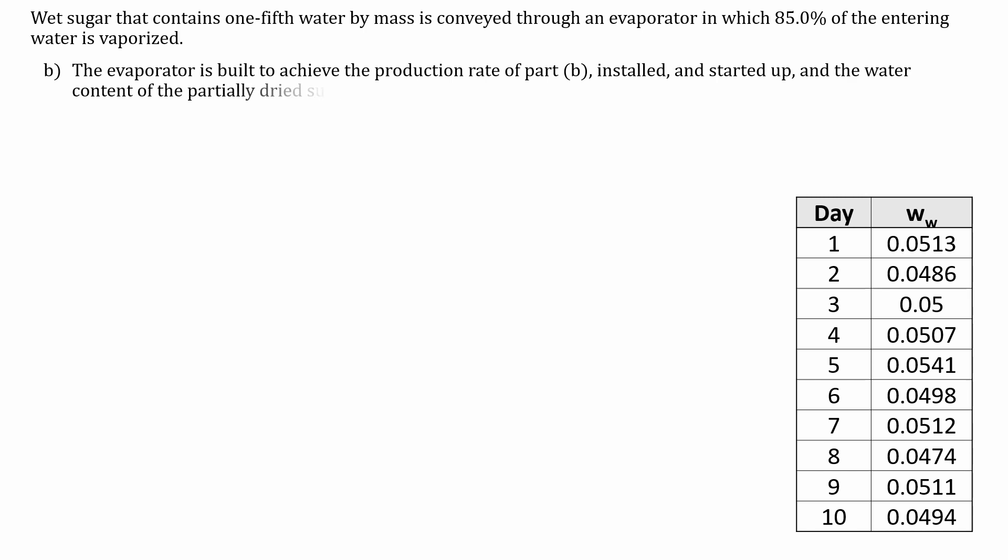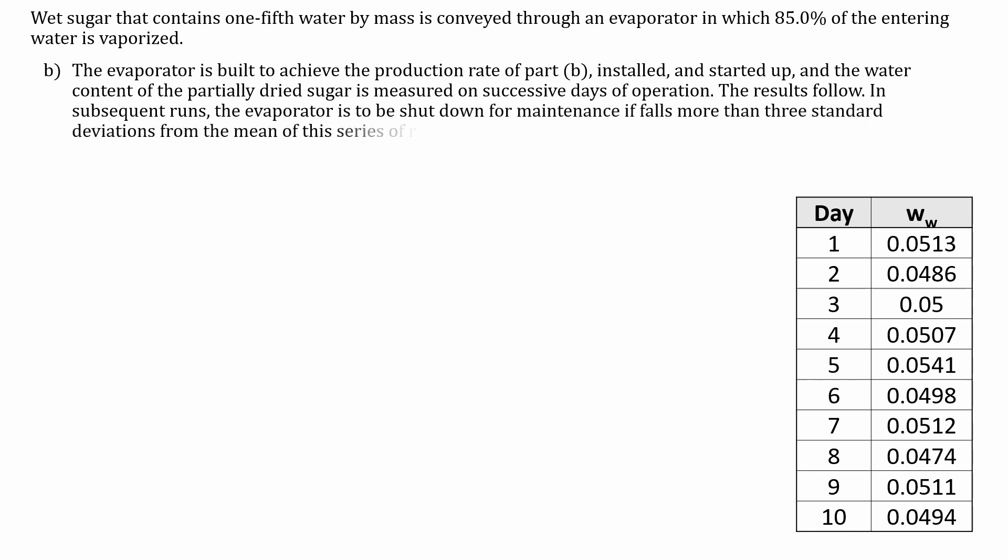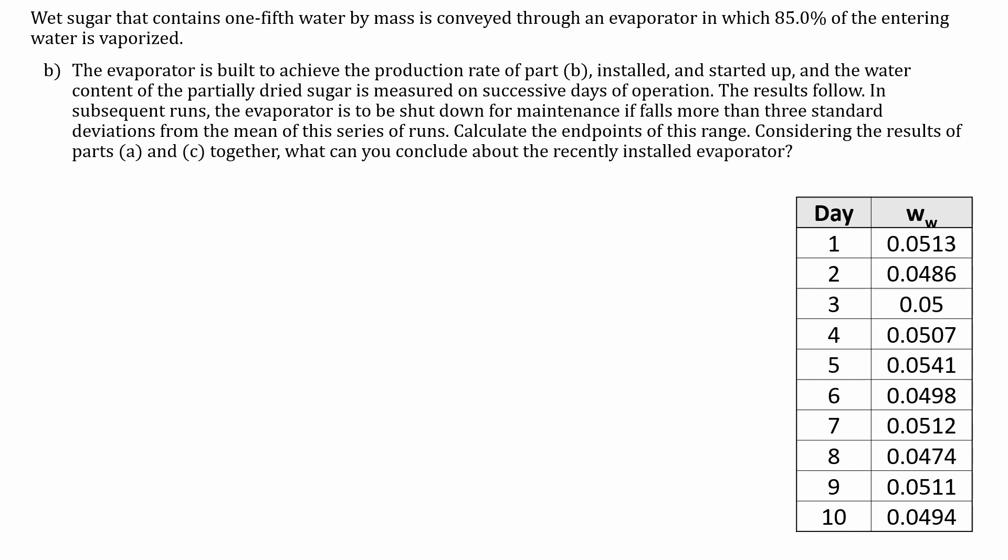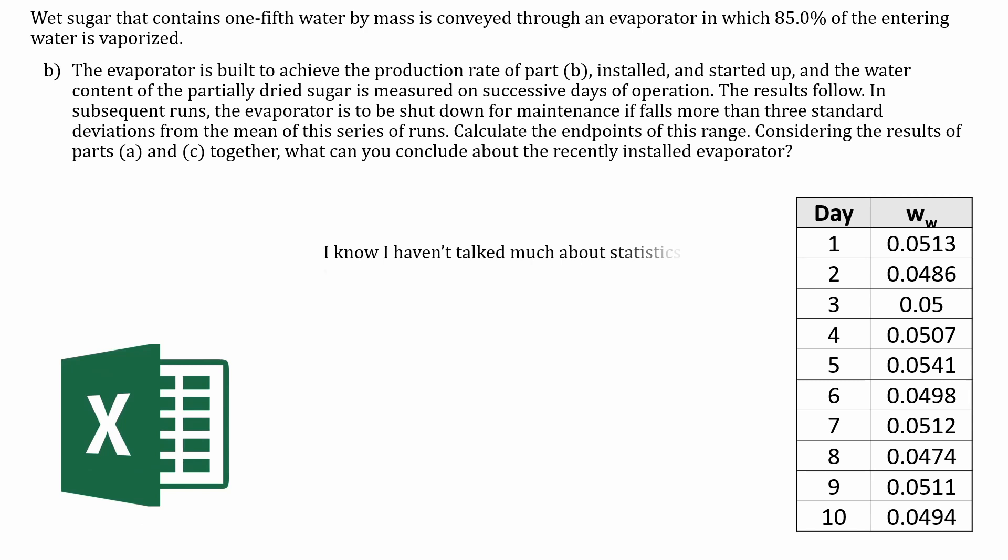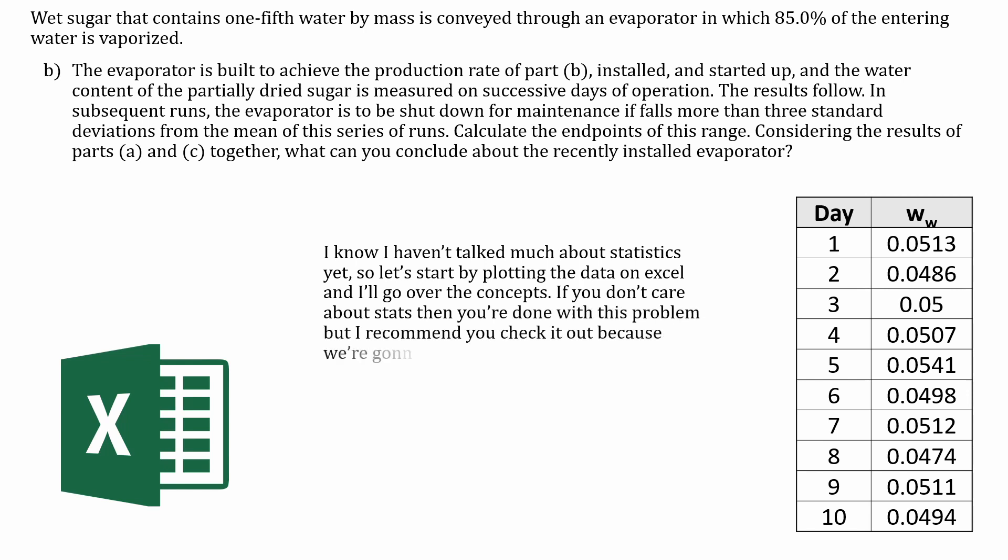For part C, we have the evaporators built to achieve the production rate of part B installed, started up in the water content of the partially dried sugar, as measured on successive days of operation. The results follow. In subsequent runs, the evaporator is to be shut down for maintenance if it falls more than 3 standard deviations from the mean of the series of runs. Calculate the endpoints of this range. And considering the results of part A and C together, what can you conclude about the recently installed evaporator? Well, I know I really haven't talked much about stats yet, so let's start by using Excel to plot the data, and I'll go over the concepts in detail. If you don't care about stats, then you're done with this problem. But I recommend you try it out anyway, just because we're going to use these concepts for sure in other classes in the future, and probably the rest of our lives.